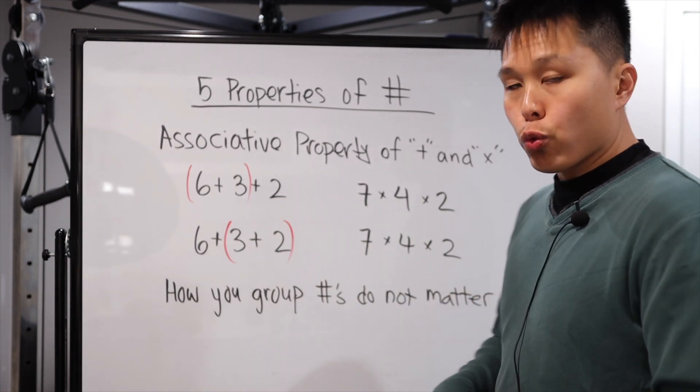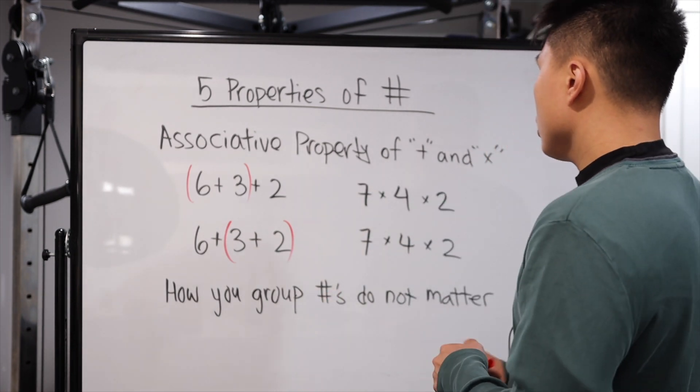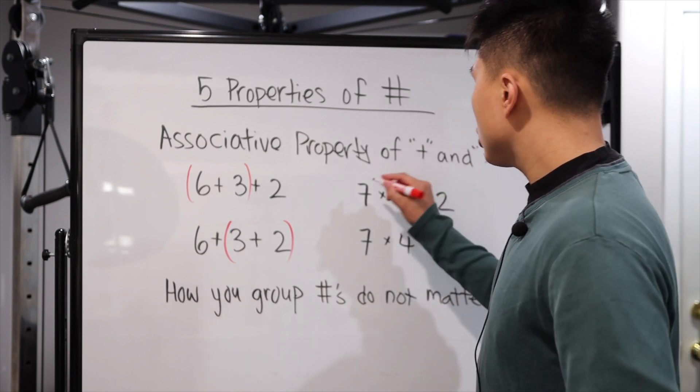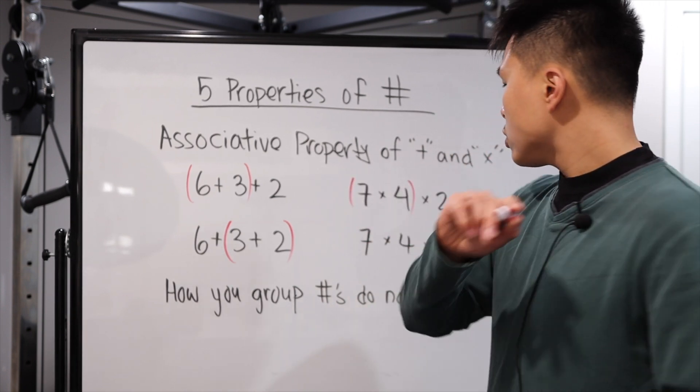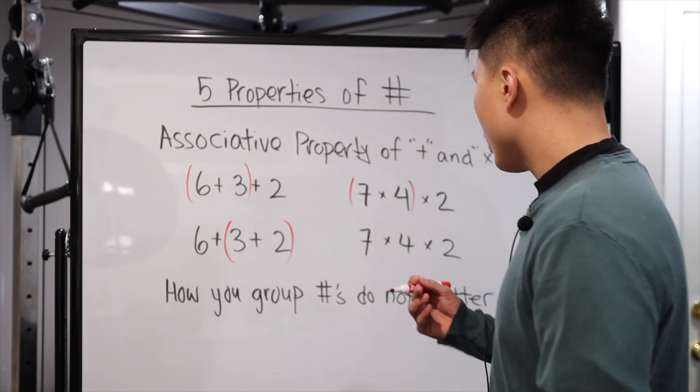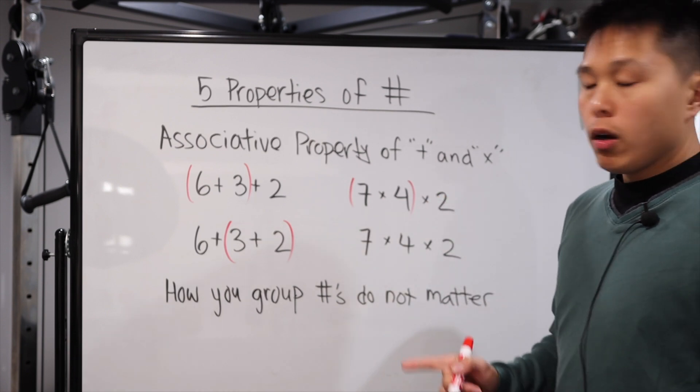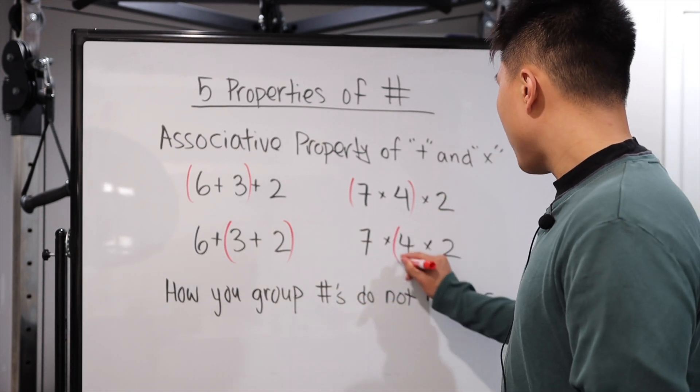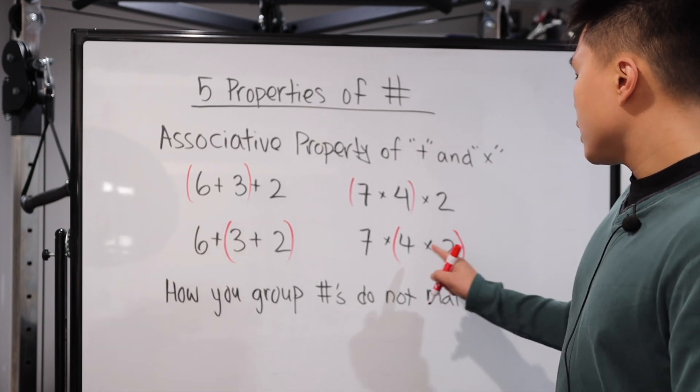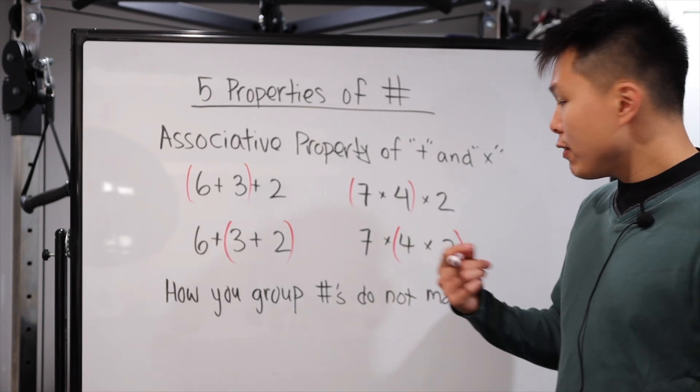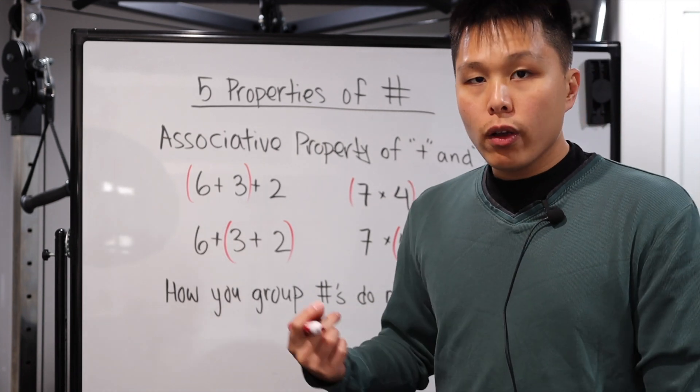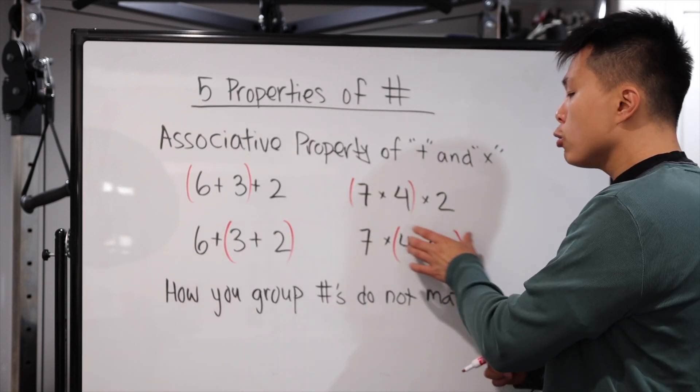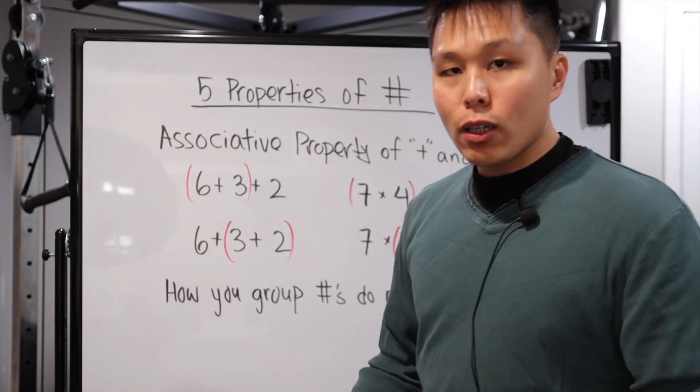The same thing occurs with multiplication. So for example, in this one, we have seven times four times two. If I choose to multiply these two first, seven times four, which is 28, then times two, that's 56. Whereas if I choose to multiply these guys right here, four times two is eight, seven times eight is still 56. So it doesn't matter how you group it first, the answer is still the same.